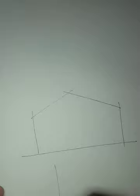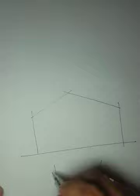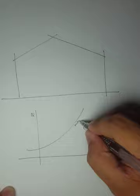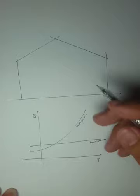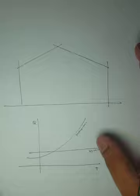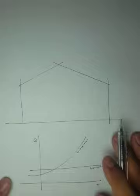We calculated ventilation rates at any ambient temperature, giving us a curve for maximum and a curve for minimum rates. The minimum rate is for moisture control and the maximum is for temperature control.